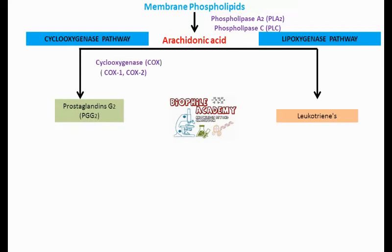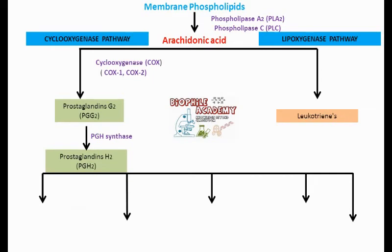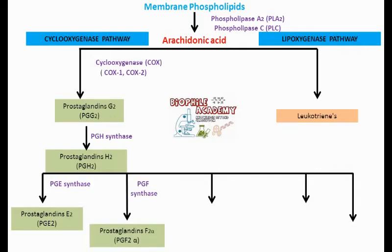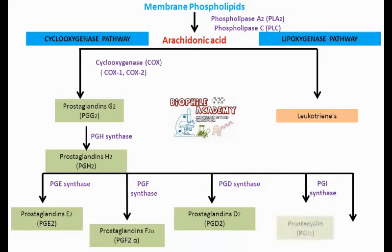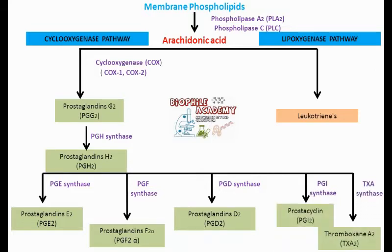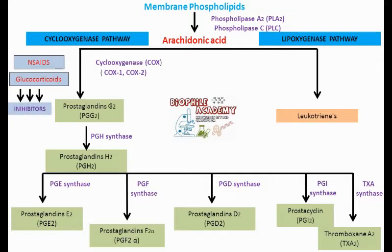COX-1 or COX-2 produces prostaglandin G2 from arachidonic acid. This prostaglandin G2, in the presence of enzyme PGH synthase, forms prostaglandin H2, which is responsible for the synthesis of various prostanoids. PGH2 in the presence of PGE synthase gives prostaglandin E2; PGF synthase gives prostaglandin F2-alpha; PGD synthase gives prostaglandin D2; and in the presence of PGI synthase and TXA synthase gives prostacyclin and thromboxanes respectively. The cyclooxygenase pathway is very important for non-steroidal anti-inflammatory drugs, as these drugs act on the COX enzyme and inhibit the synthesis of inflammatory prostanoids.